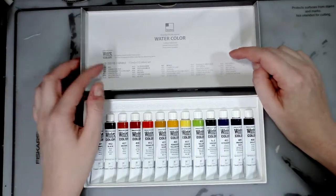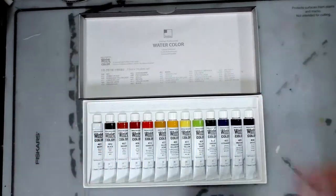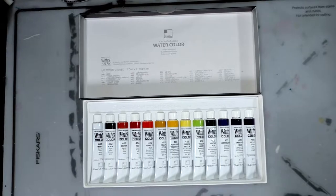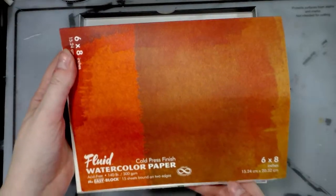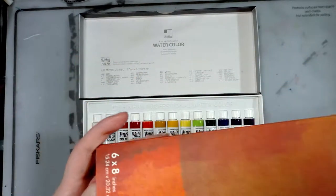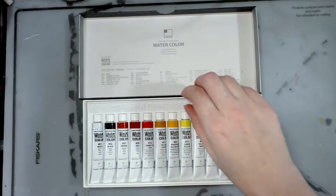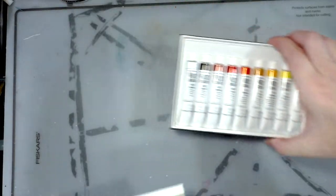There isn't a swatch sheet on the inside of this, which - I've gotten spoiled. Mijello has some nice swatch sheets for the interior. For swatching I'm going to use Fluid watercolor paper, the cellulose-based watercolor for the initial swatch.